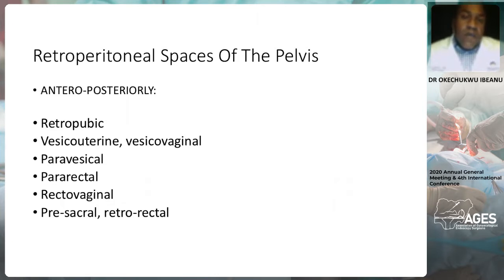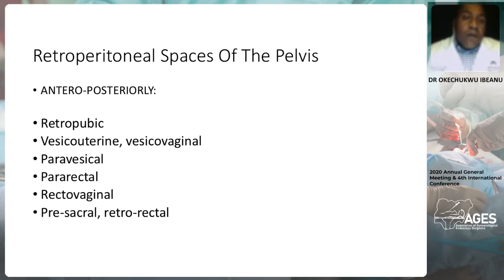The retroperitoneal spaces of the pelvis are avascular spaces which are typically collapsed and need to be developed during surgery. The main reason we utilize these spaces is to safely skeletonize vascular pedicles and minimize blood loss, but also to identify critical structures to avoid injury and morbidity. The pelvic spaces from anterior to posterior are the retropubic space, the vesicovaginal space, the vesicouterine space, paravesical, pararectal, the rectovaginal space, and the presacral space.